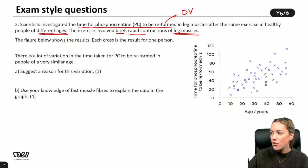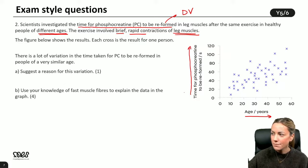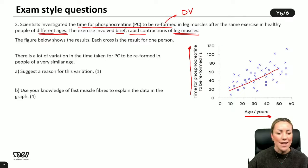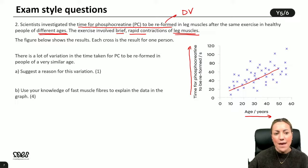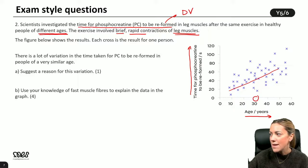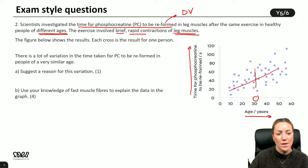The figure shows the results. Each cross is the result for one person. Age is increasing on the x-axis and time for phosphocreatine to reform is increasing on the y-axis. There appears to be a weak positive correlation whereby as age increases, the time taken for phosphocreatine to reform in the leg muscles also increases. However, even with the positive correlation, there is a lot of variation - for example, people of the same age, say around 30, show a lot of variation in the time taken.